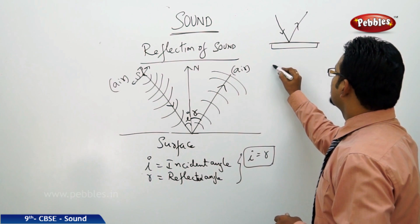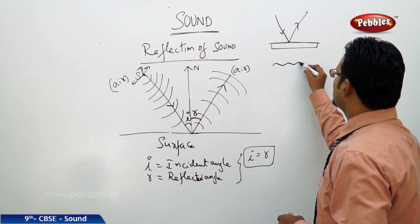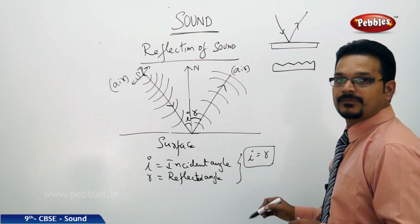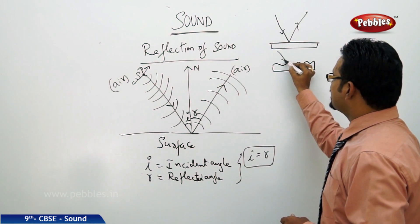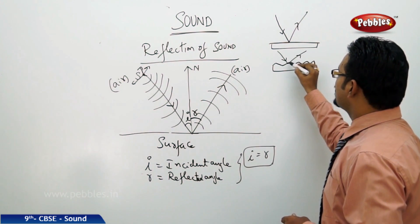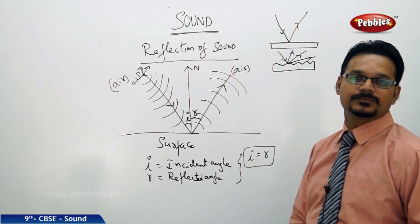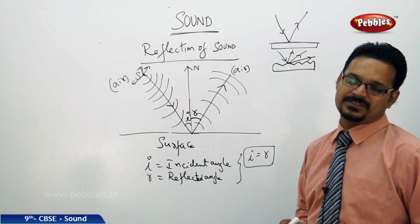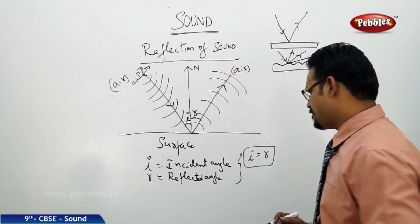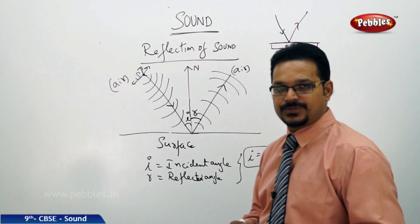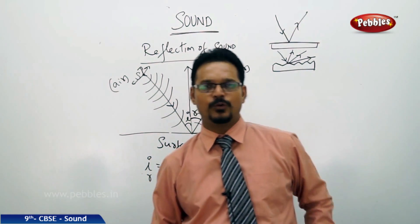But, if it has irregular surface, then the sound wave falls, incident, and it reflects irregularly. Irregularly. Irregularly means in different directions. In auditoriums, big auditoriums, like in Hyderabad, Shilpa Kala Vedika auditorium, if you see, it is a very big auditorium.